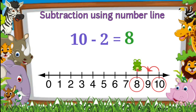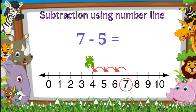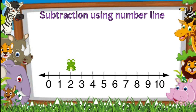Seven minus five — tell me children, which one is the first number? That's right, seven is the first number. So the frog will start at seven and jump five numbers towards the left side: one, two, three, four, five. The frog lands on number two, therefore seven minus five is equal to two. I hope now everyone is clear with number line subtraction.